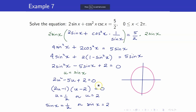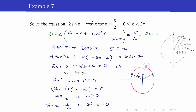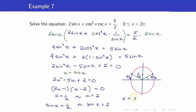We now solve sine x equals 1 half. Sine refers to the y-coordinate on the unit circle, so this is 1 half. The angles would have their points of intersection with the unit circle here. The y-coordinate is 1 half, and the reference angle is pi over 6. Therefore, our x here is pi over 6, and the angle on the second quadrant, which is pi minus pi over 6, gives us 5 pi over 6.